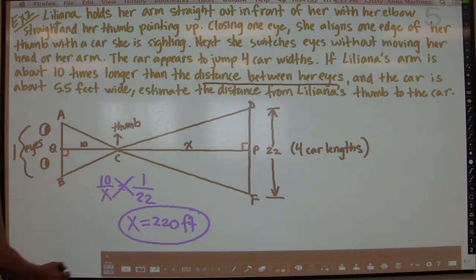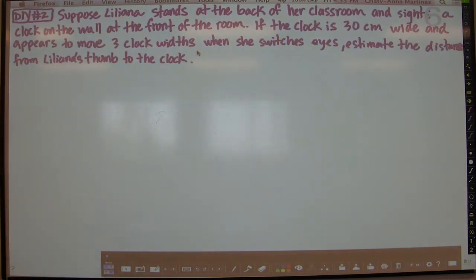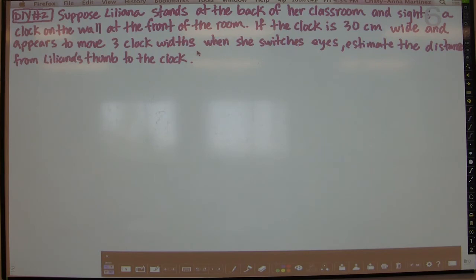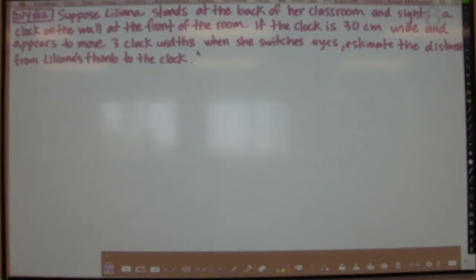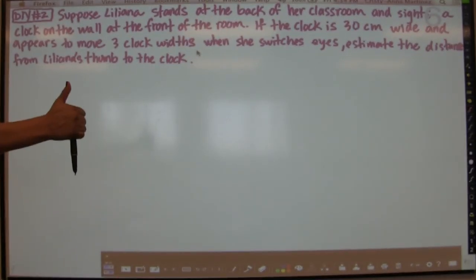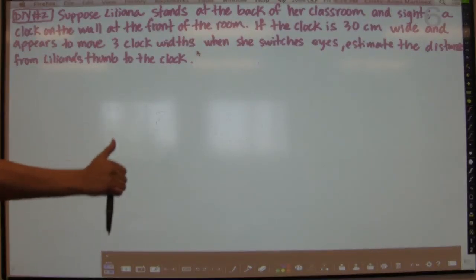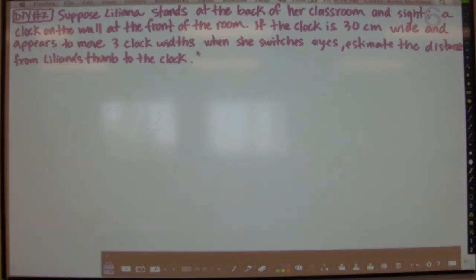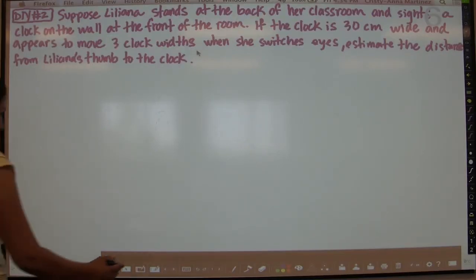Now we'll add some information: suppose Liliana stands at the back of her classroom and sights a clock on the wall at the front of the room. She does the same thing — same type of diagram — but with different information. That's your example to complete.